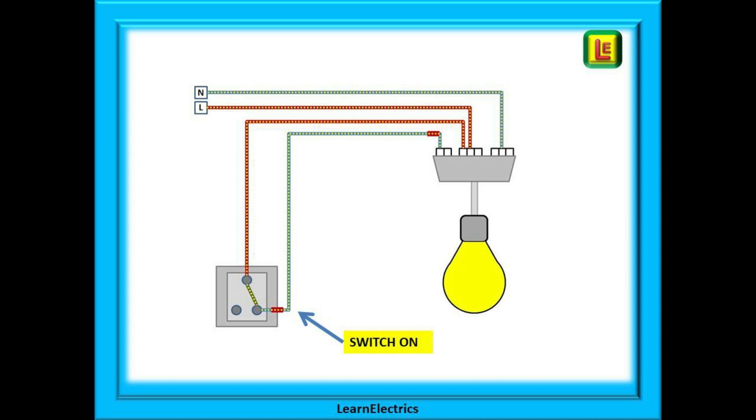Close the switch and the whole circuit is now complete. Electrical current can flow from the consumer unit through the switch, through the lamp and back to the consumer unit along the neutral wire. The lamp comes on.